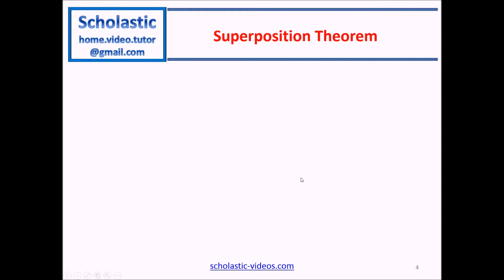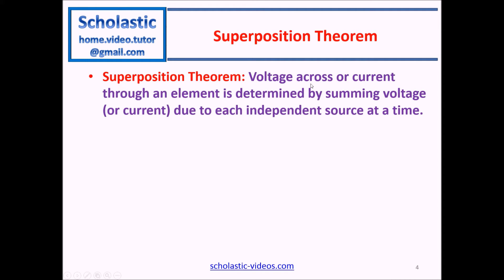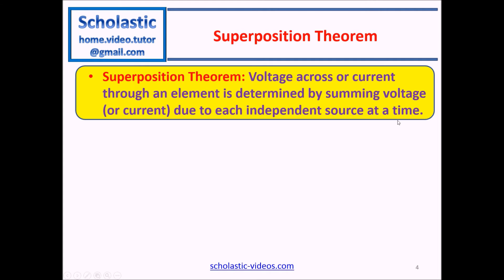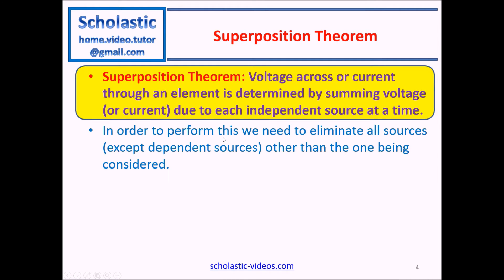Let's first see what is the definition of the superposition theorem. It states that the voltage across or current through an element is determined by summing the voltage or current due to each independent source at a time. Please note that dependent sources will be covered in another lesson, so in this case we are using only independent sources.